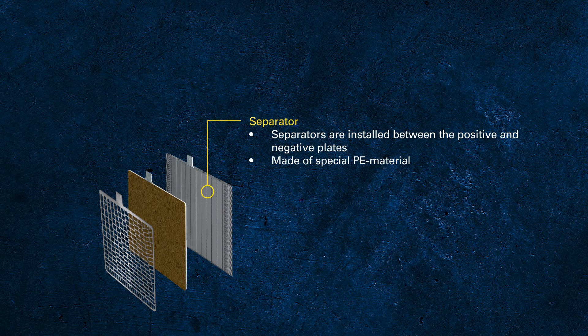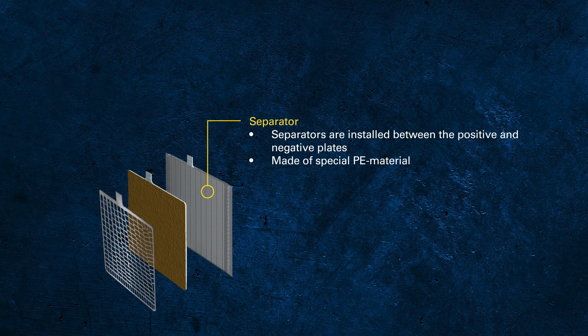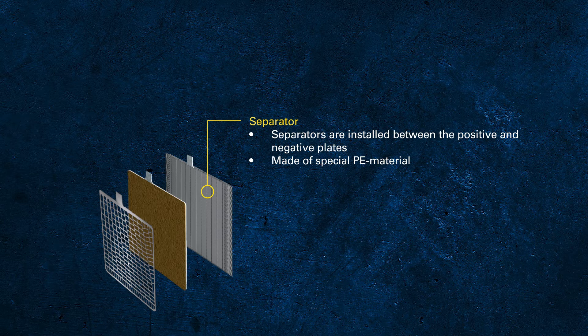The positive plate is surrounded by a separator to isolate it from the negative plate. The separator is made from a special microporous PE material to allow the exchange of chemical elements between the plates and the electrolyte.